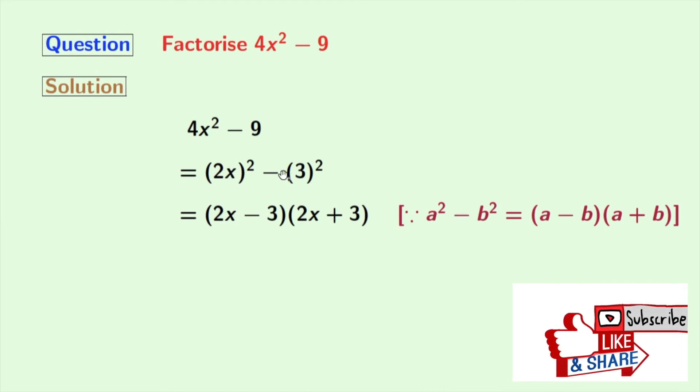we get from this 2x minus 3 times 2x plus 3, where a is equal to 2x and b is equal to 3.